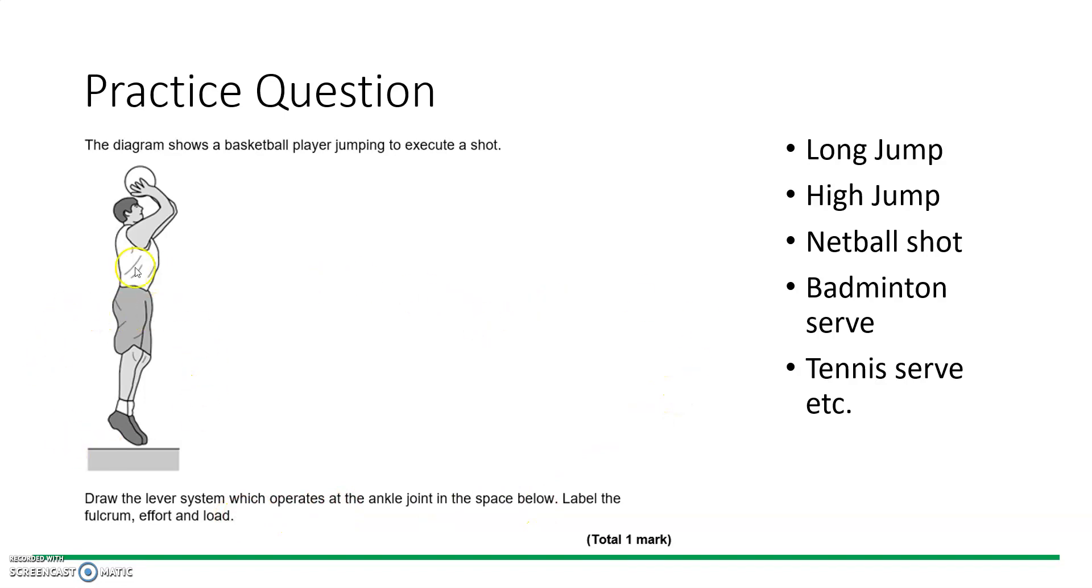This question could quite easily be an example of long jump or high jump upon execution, or netball. A badminton serve where a player goes on their tiptoes in order to raise that lower bottom rib to make the serve legal, for a backhand flick, or a tennis serve when they go onto their tiptoes. It doesn't matter - the principle is the same as the second class lever at the ankle tiptoe.